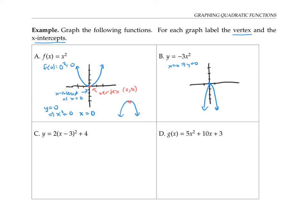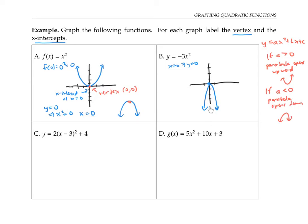In general, a negative coefficient on the x² term means the parabola will be pointing down, whereas a positive coefficient means the parabola is pointing up. So if a > 0, the parabola opens up, and if a < 0, the parabola opens down. In this second example, the vertex is again at (0, 0) and the x-intercept is x = 0.